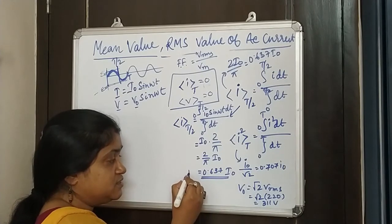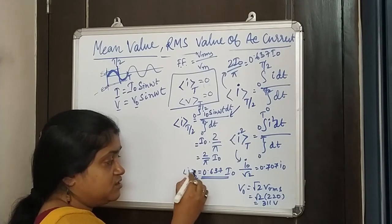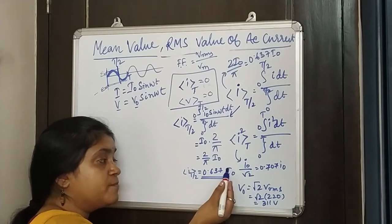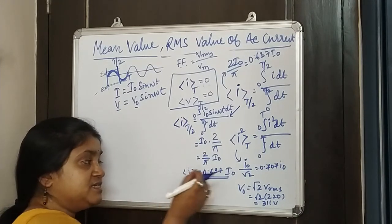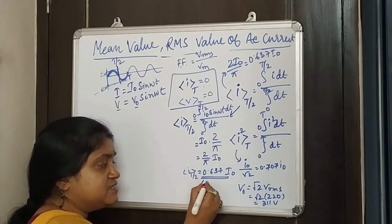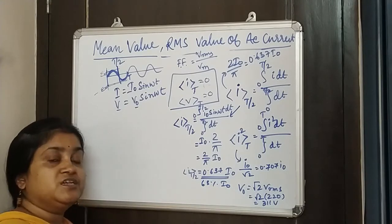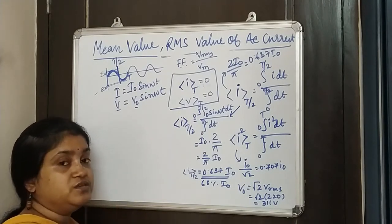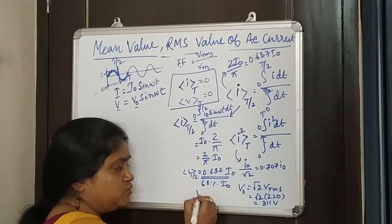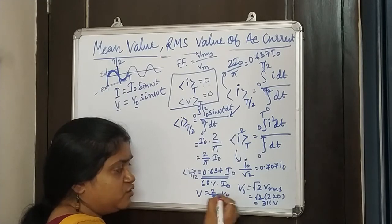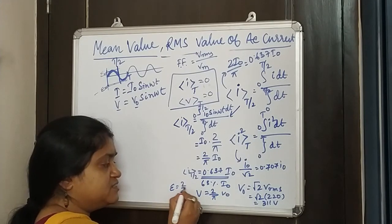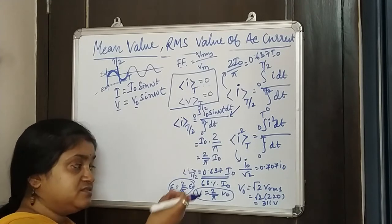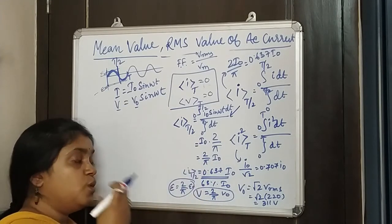So the average over the half cycle is 0.637 times I₀, which means the mean value is approximately 63% of the maximum value. This is what we call the mean value or average value of AC current or AC voltage. Similarly, the mean voltage is (2/π) × V₀ and the mean EMF is (2/π) × E₀.